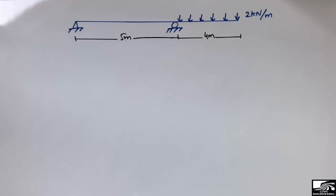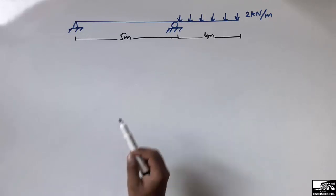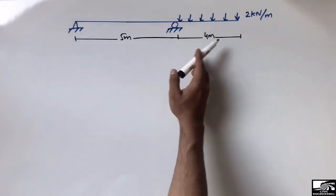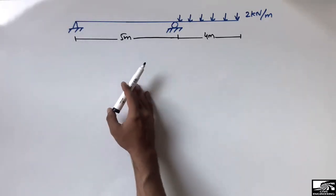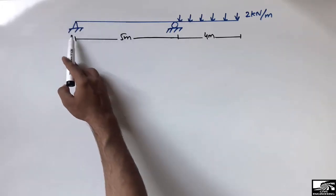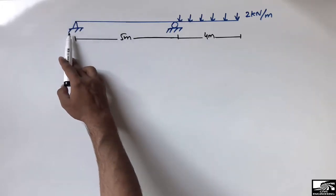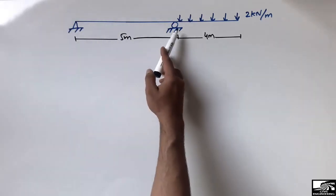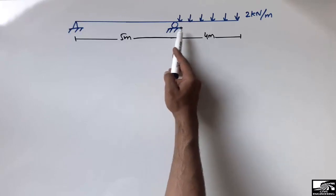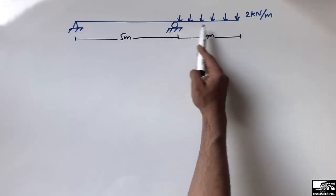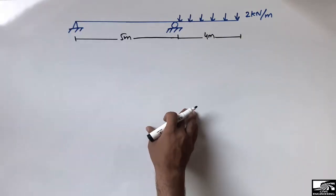Hello guys, welcome back to the Seven Engineering YouTube channel. Please subscribe for daily videos. Today our lecture is about drawing the shear force and bending moment diagram of an overhanging beam. There is a hinge support at the left, a roller support at the middle, and the other portion is hanging — so we call this type of beam an overhang beam.